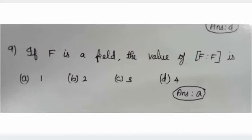And ninth question. F1 the field is... value of F over F. What is the value of F over F? How are the answer? Answers are 1, 2, 3, 4. So F1 the field is F over F. Degree of F over F? F1 the field is. So answer option A.